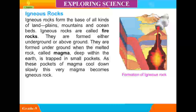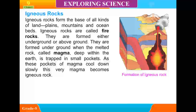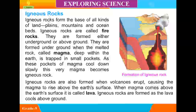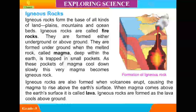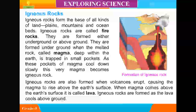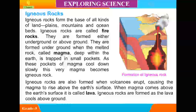Igneous Rocks. Igneous rocks form the base of all kinds of land, plains, mountains and ocean beds. Igneous rocks are called fire rocks. They are formed either underground or above ground. They are formed underground when the melted rock, called magma, deep within the earth is trapped in small pockets. As these pockets of magma cool down slowly, this very magma becomes igneous rocks.